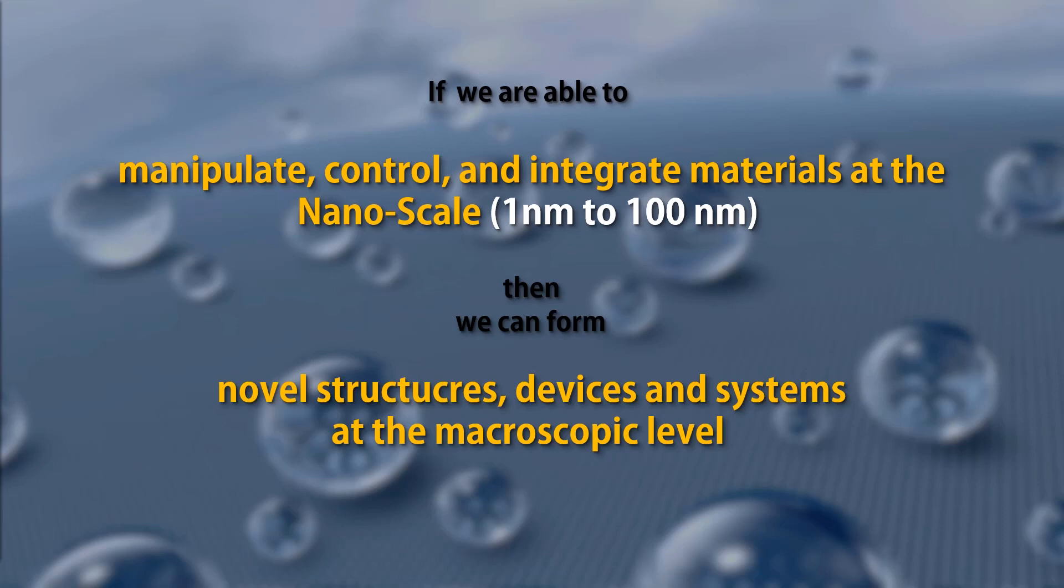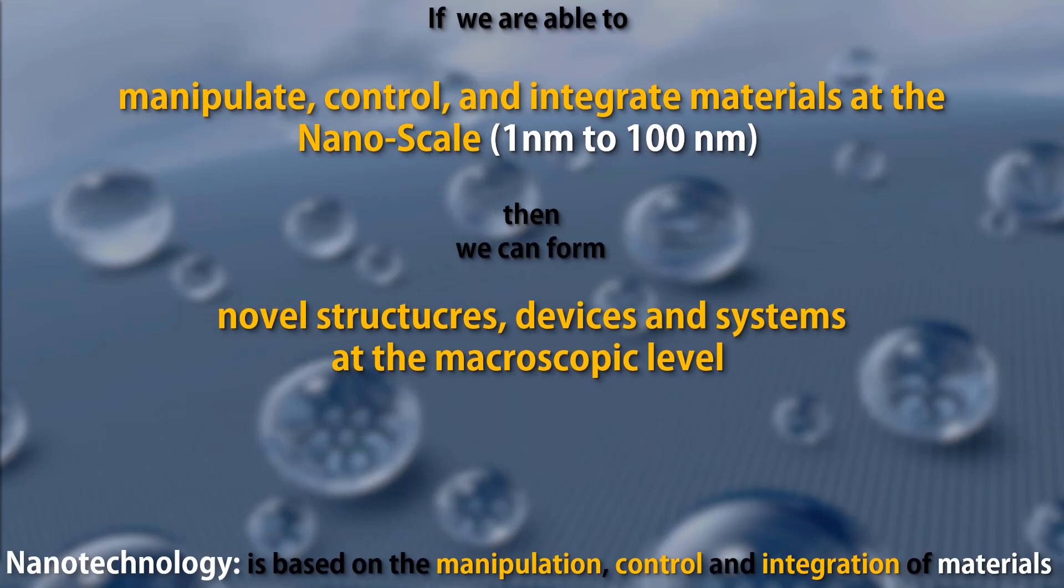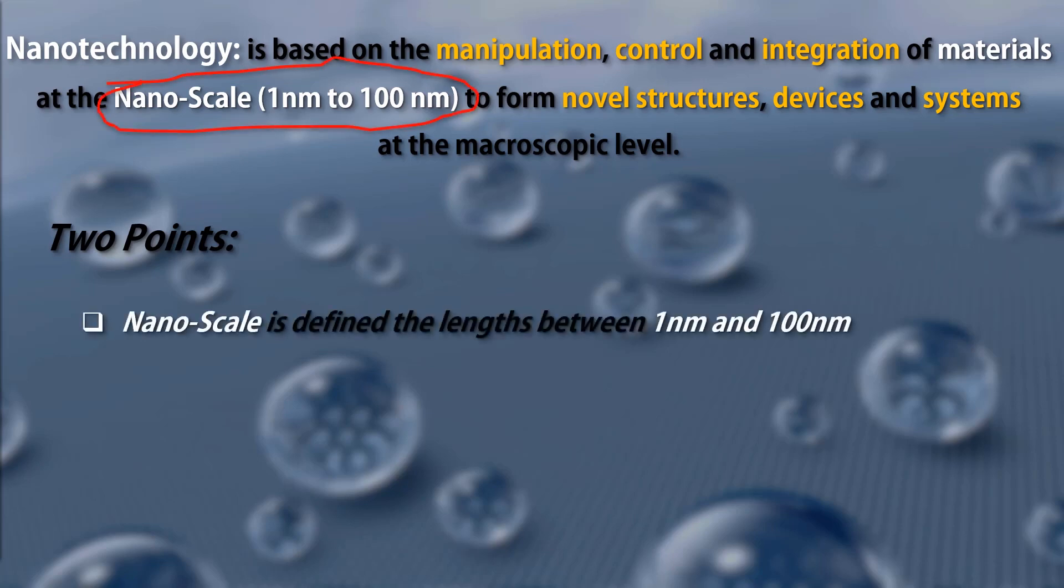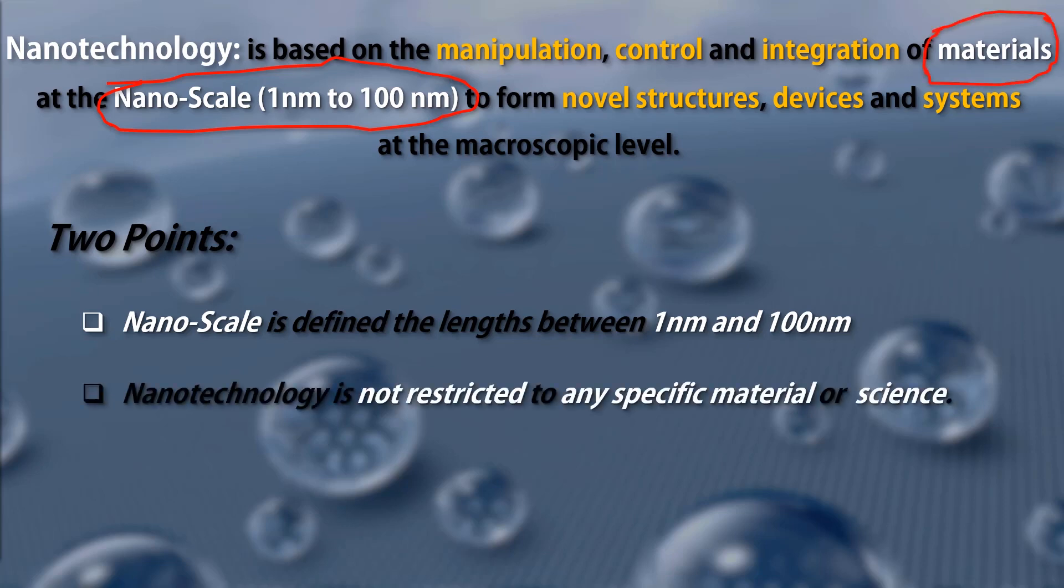then we can form novel structures, devices, and systems at the macroscopic level. In other words, nanotechnology is based on the manipulation, control, and integration of materials at the nanoscale, 1 nanometer to 100 nanometers, to form novel structures, devices, and systems at the macroscopic level. Well, there are two important points here that we need to pay attention. First, nanoscale is defined the lengths between 1 nanometer to 100 nanometers. Second, nanotechnology is not restricted to any specific material or science. Let me expand these points one by one.